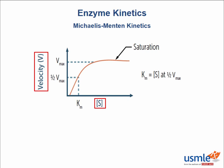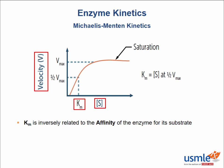So let's talk more about affinity. In the world of enzyme kinetics, the Michaelis constant, called Km, is inversely related to the affinity of an enzyme for its substrate. Km is the substrate concentration at which the enzymes are working at 50 percent Vmax.